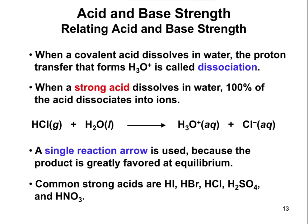Common strong acids are shown at the bottom. I want you to know these last three in particular, because whenever we get into organic chemistry, some reactions only occur in the presence of a strong acid, and these will be the three you see. So: HCl, hydrochloric acid; H2SO4, sulfuric acid; and HNO3, nitric acid. Those are really common strong acids you should be familiar with.